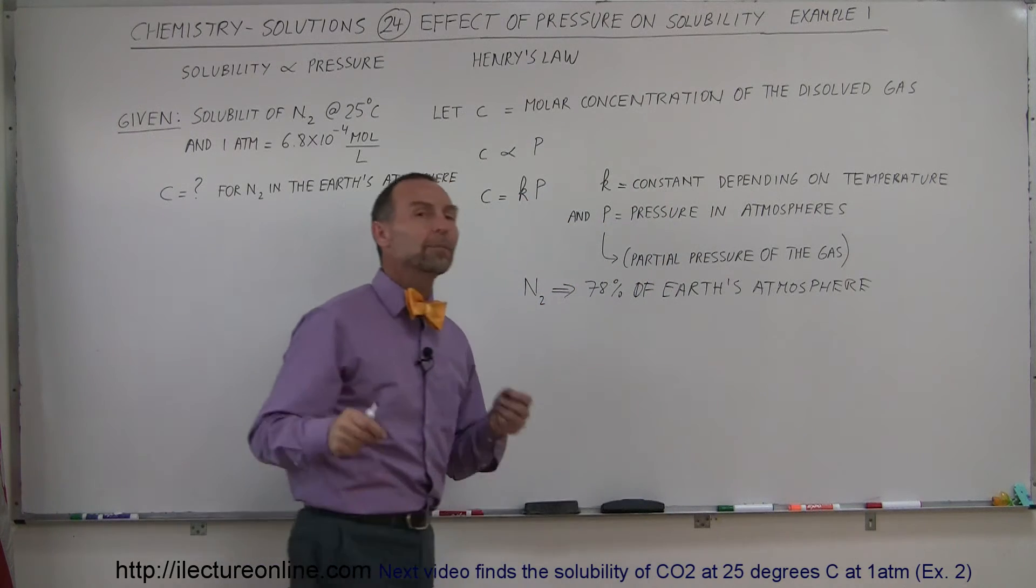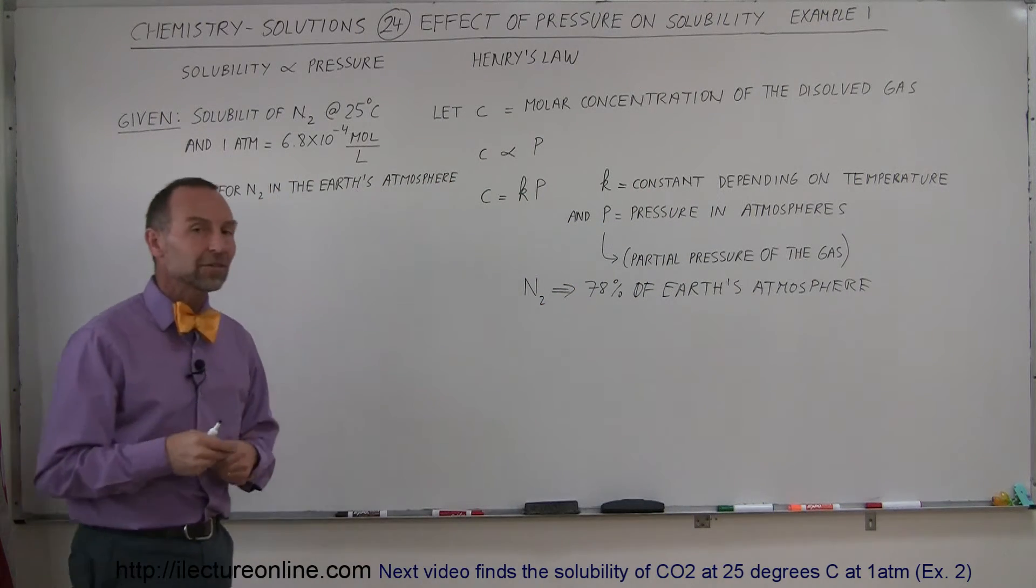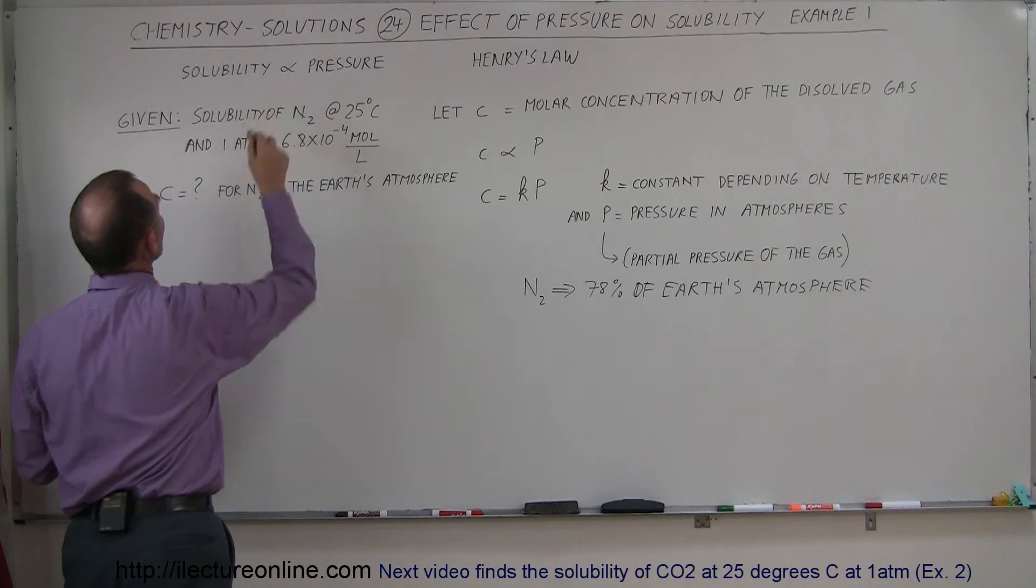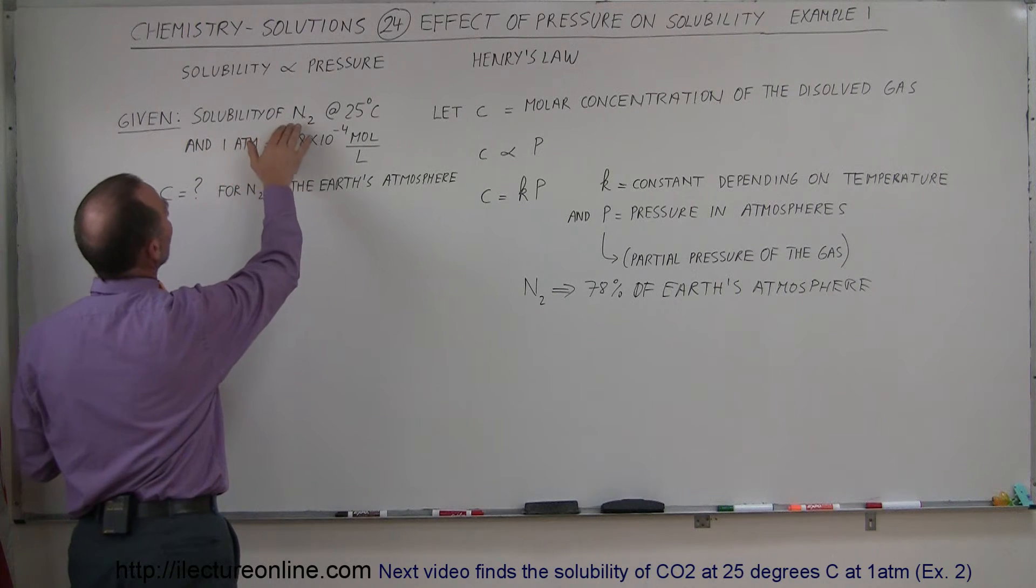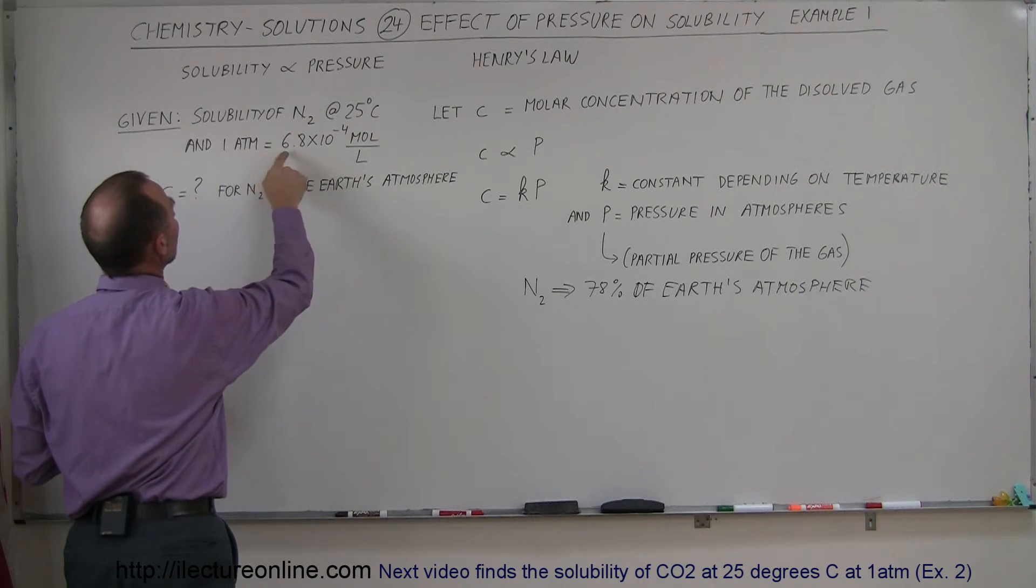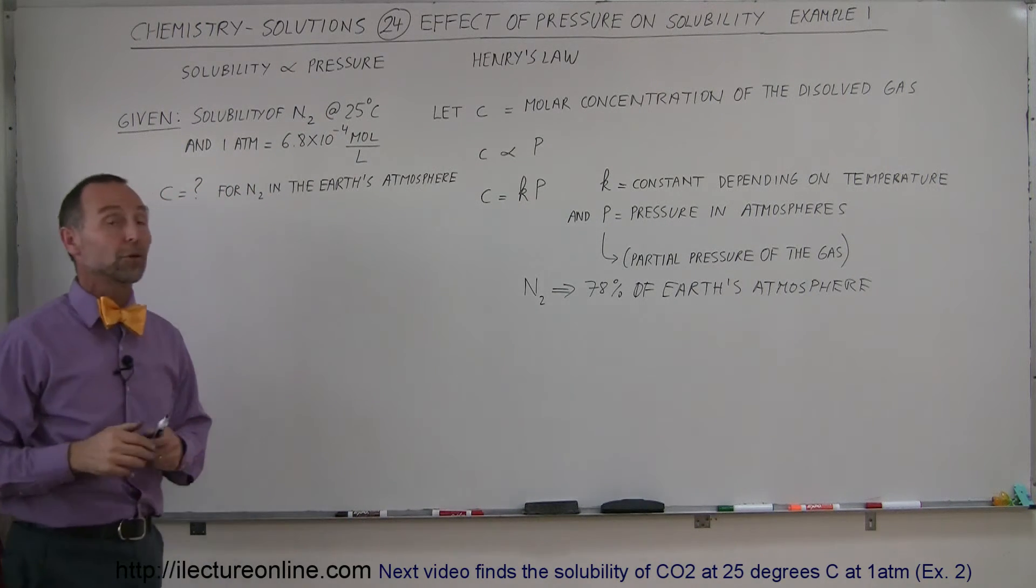And we want to know what the solubility of nitrogen gas is under those circumstances. So we also know that the solubility of nitrogen gas at 25 degrees centigrade in one atmosphere is 6.8 times 10 to the minus 4 moles per liter.